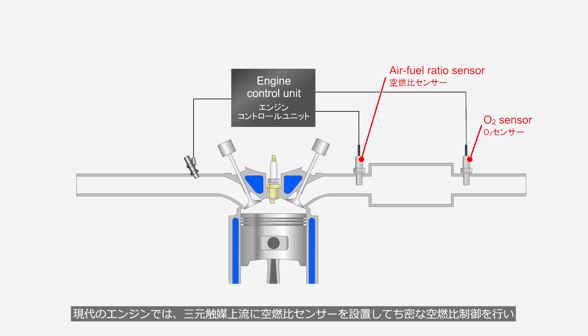In modern engines, an air-fuel ratio sensor is installed upstream of the three-way catalytic converter for precise air-fuel ratio control, and an O2 sensor is installed downstream to monitor the degradation of catalytic converter performance.